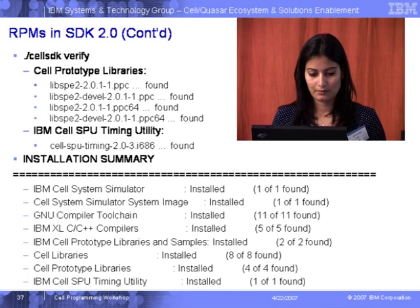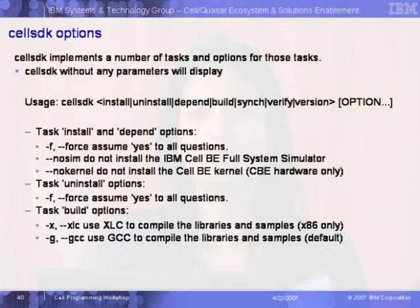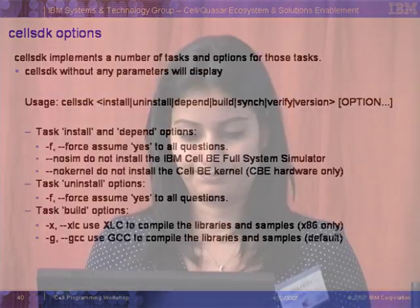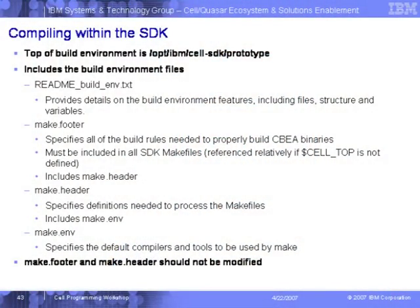Install components for x86 and PPC64 platforms are available for reference. There's a list of RPMs in SDK 2.0. Installing is very easy — all you need to do is download the ISO file from DeveloperWorks, run the script with the install option, and your development kit will be installed. There are also clear instructions for installing the Cell IDE. The development kit comes with a standard makefile environment, which we'll go over in the afternoon.